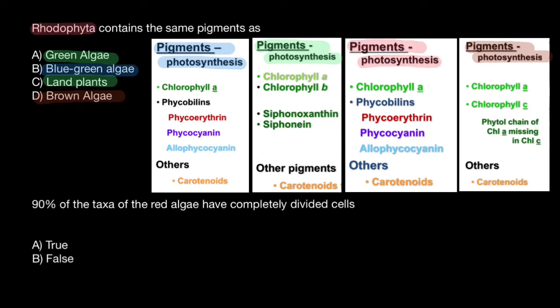Rhodophyta means red algae, and this picture stands for the Rhodophyta. It has the same primary pigments and accessory pigments as blue-green algae, so from this point of view they are not different. Our answer is going to be answer B — red algae has the same primary and accessory pigments as blue-green algae.